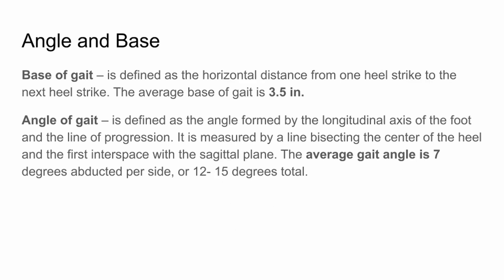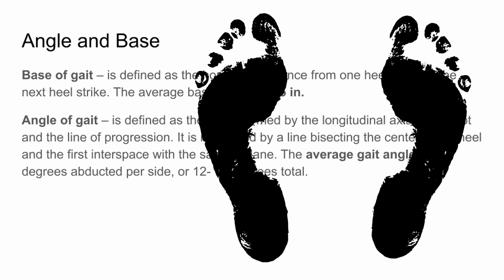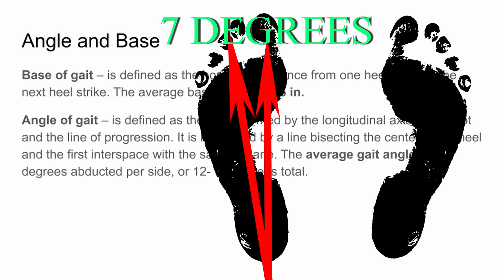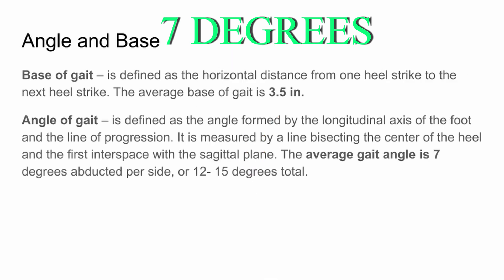The angle of gait is defined as the angle formed by the longitudinal axis of the foot and the line of progression. It's measured by bisecting the center of the heel in the first inner space with the sagittal plane. The average gait angle is 7 degrees abducted per side, or about 12 to 15 degrees total.